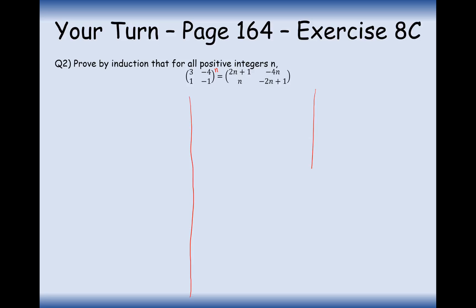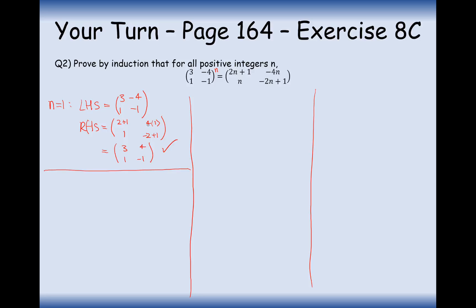Well done for having a go at that question — it was quite tricky. Let's go through it together. Proving our theorem true for n=1: the left-hand side is just (3, −4; 1, −1)¹, which is that matrix. The right-hand side substituting n=1 gives 2×1+1=3, −4×1=−4, 1, and −2×1+1=−1, so (3, −4; 1, −1). Left-hand side equals right-hand side. Show the calculations of substituting in 1 — don't just copy down the matrix or you may miss marks.